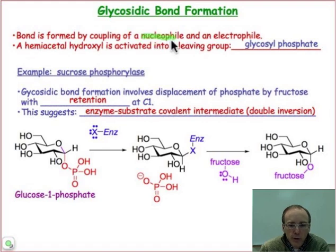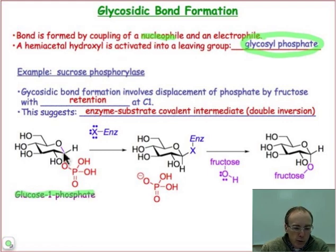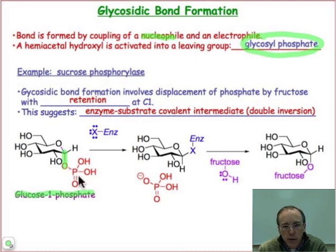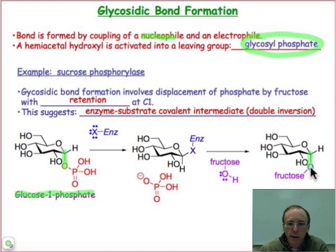The nucleophile is a hydroxyl group on one of the monosaccharides, and the electrophile is a glycosyl phosphate, such as glucose-1-phosphate that you can see here. Why phosphate? Because it's a good leaving group — that anomeric hydroxyl group has been transformed into a phosphate ester. This makes glucose the electrophilic partner for the glycosidic bond formed in the disaccharide sucrose.